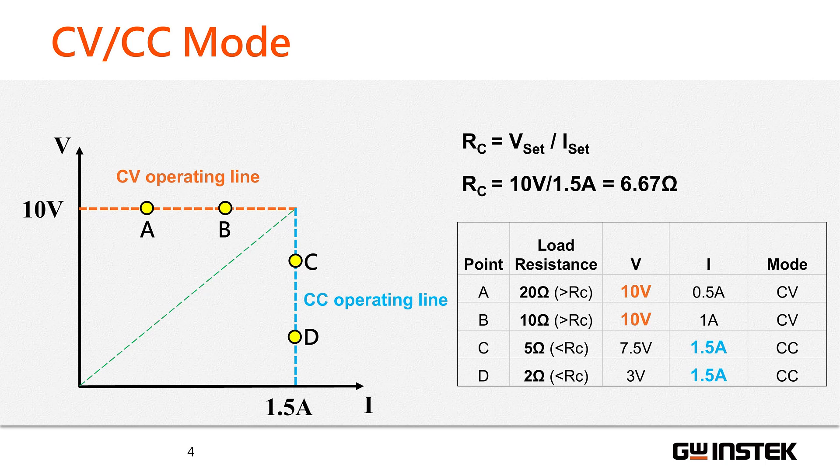On the other hand, for load resistances of 5 ohms and 2 ohms, they fall below the critical resistance value. Consequently, the power supply switches to CC mode to maintain a constant current. The V-I point stays on the blue line.